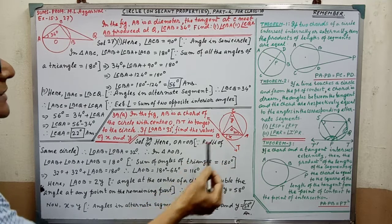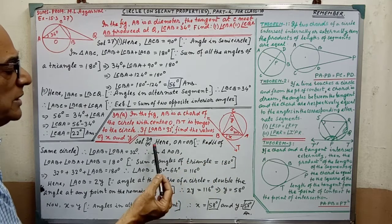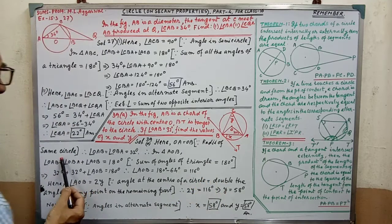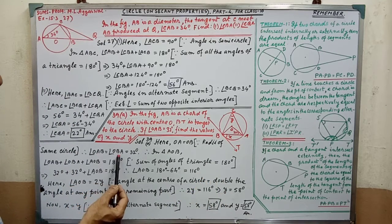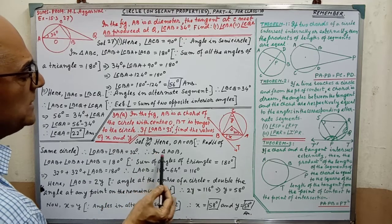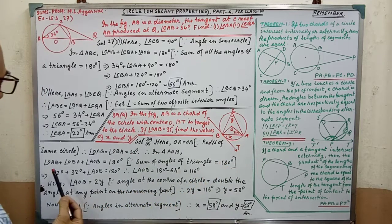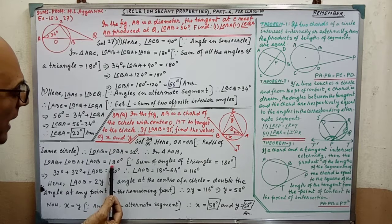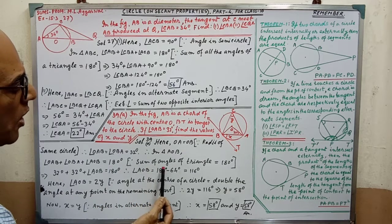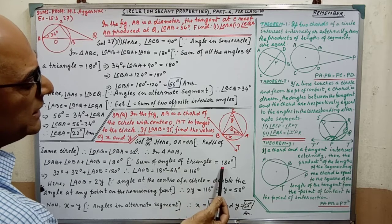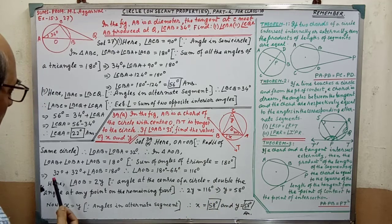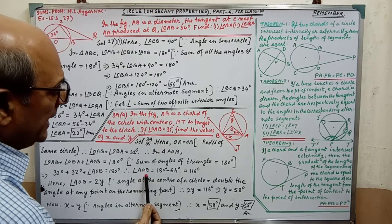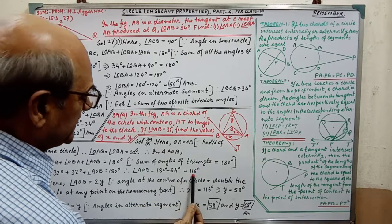You know very well, after drawing the diagram, you will start your solution. Here, OA equal to OB, since radii of same circle. Therefore angle A equal to angle B, that is 32 degree. In triangle AOB, by adding the three angles, it will be 180 degree, since sum of angles in a triangle equal to 180 degree. By putting the relevant values and simplifying, we are getting angle AOB equal to 116 degree.